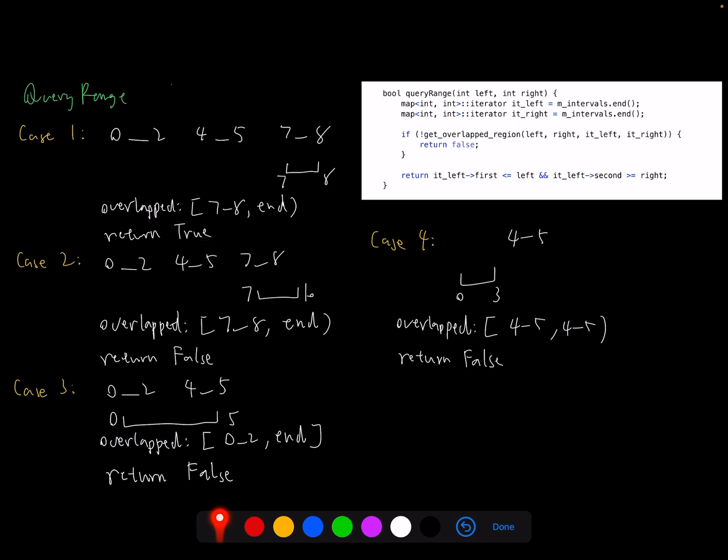Then we check this left open one is completely contained in the query range. So 7 is greater than or equal to 7, and 8 is greater than or equal to 8, so we return true. Second case, we have 7 to 10. Again, our overlap region returns the same region. However, 7 to 8 here does not completely contain 7 to 10, because the right iterator 8 is not greater than or equal to 10, so we return false here.